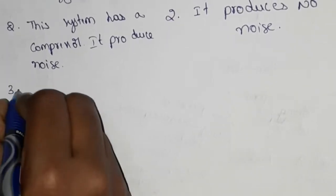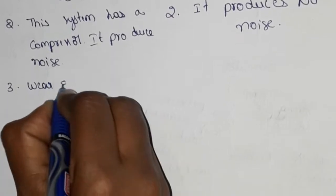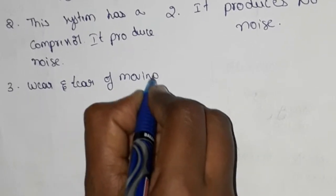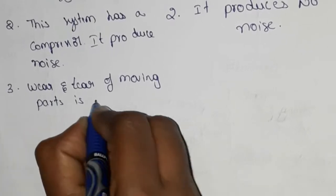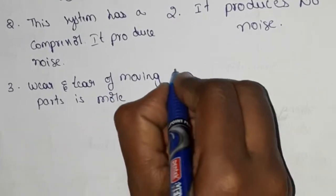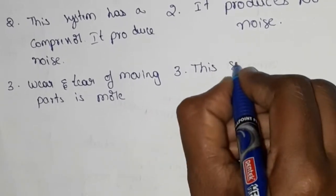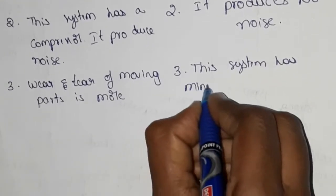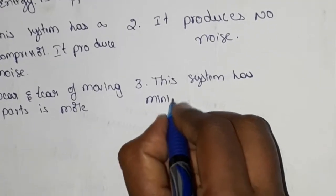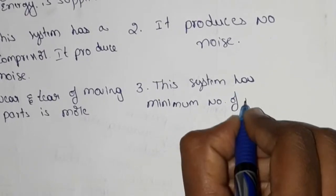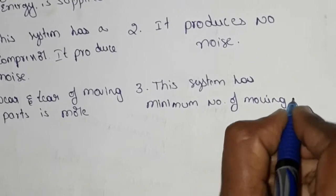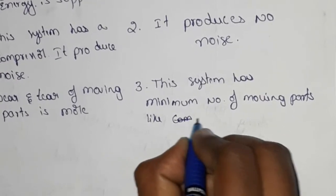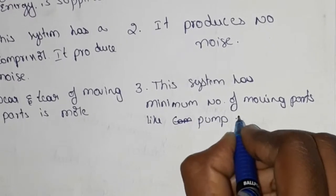Third point: in the vapor compression system, the number of moving parts is more. In the vapor absorption system, this system has a minimum number of moving parts, like a pump and controls.